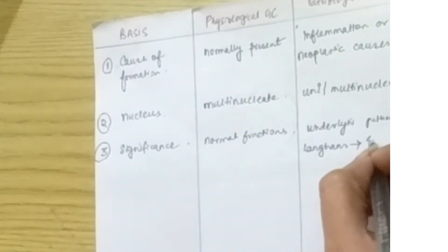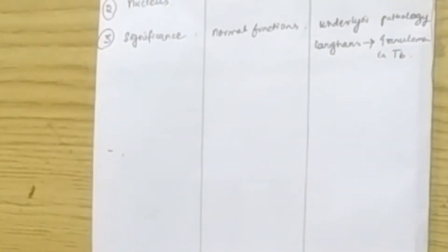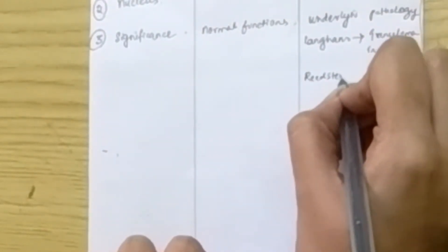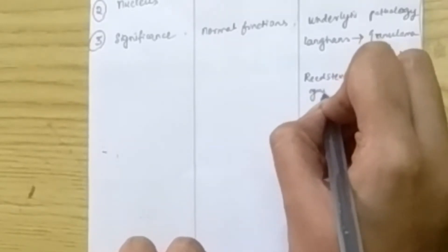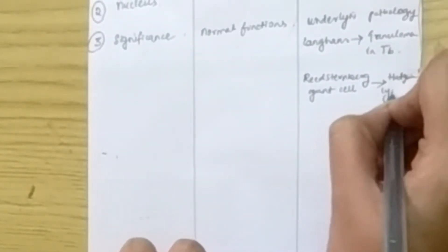But if there is Reed-Sternberg giant cell, that means they tell you there is Hodgkin's lymphoma condition in the body. So they are telling us about the underlying cause. Reed-Sternberg giant cell will tell you that there can be Hodgkin's lymphoma.